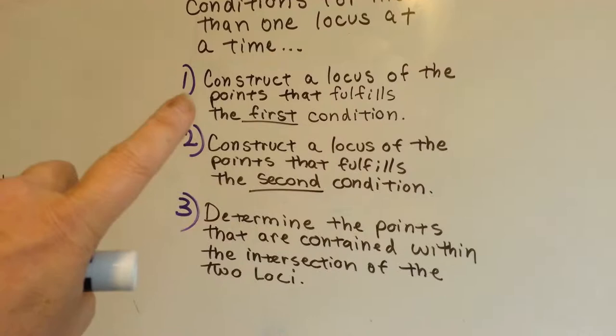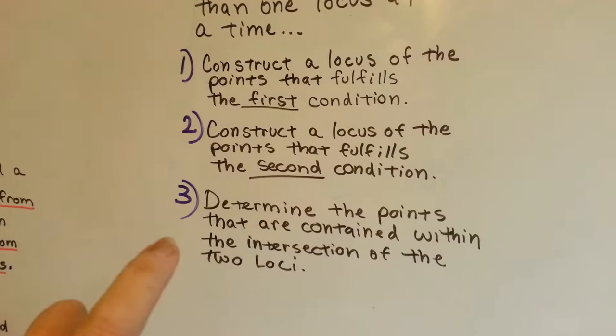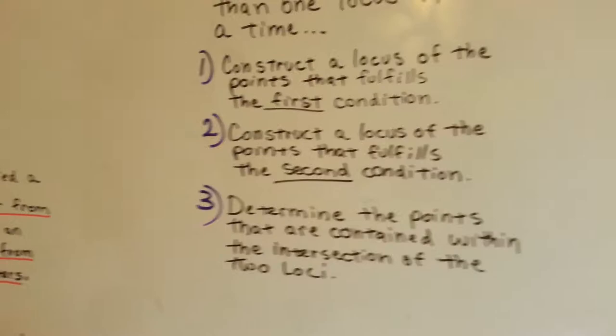You construct a locus of the points that fulfills the first condition, then you do it for the second condition, and then you determine the points that are contained within the intersection of the two.